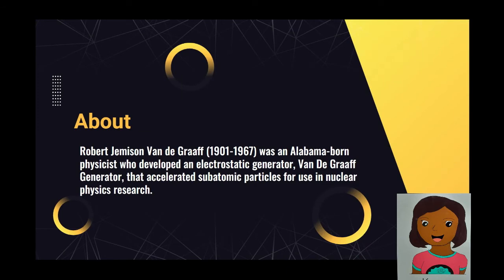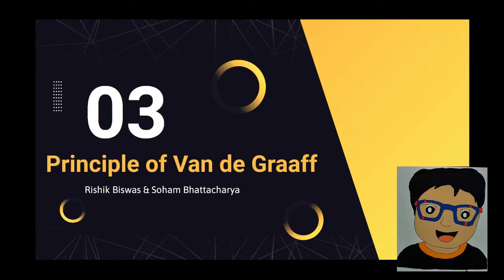Robert Jameson Van de Graaff (1901–1967) was an Alabama-born physicist who developed the electrostatic Van de Graaff generator that accelerated subatomic particles for use in nuclear physics research. The principles of the Van de Graaff generator will now be taught by Righney, Rishibut, and Soham Bhattacharya.